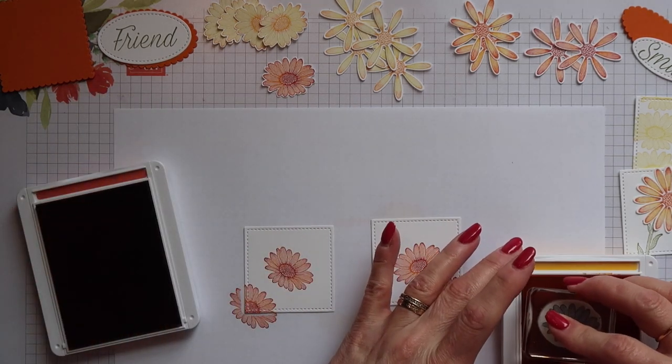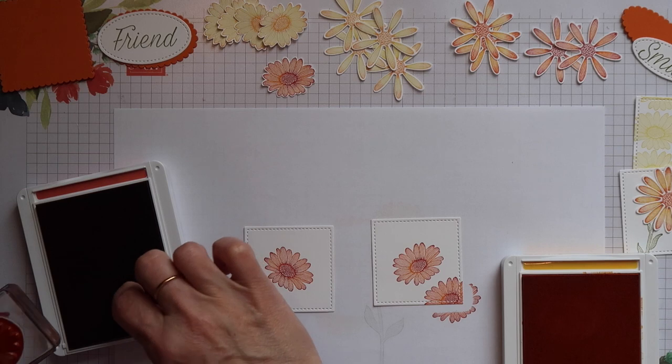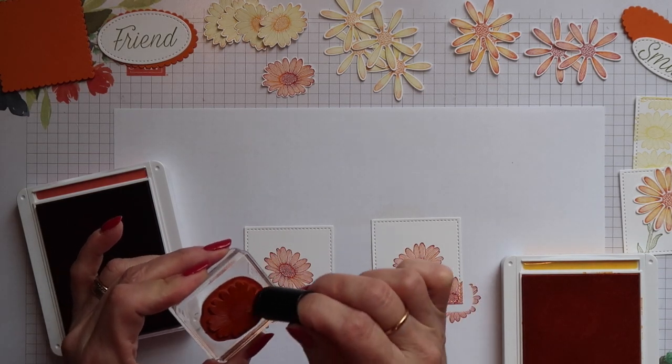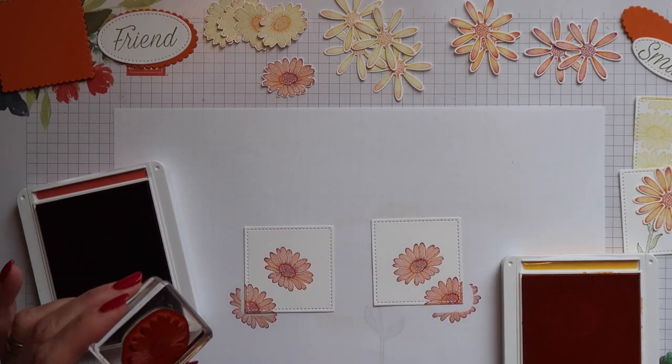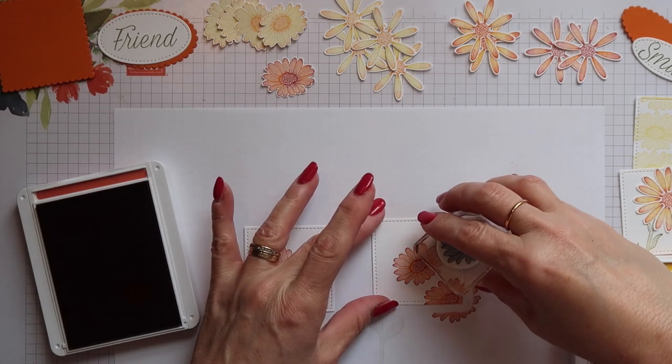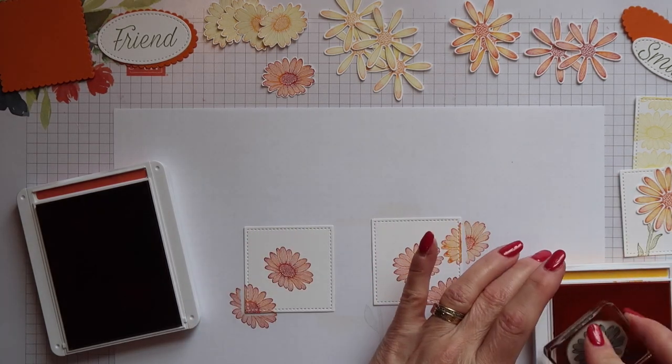I'm now changing to Mango Melody and Terracotta Tile and I'm going to stamp two more daisies on each panel, one either side of the ones I've just stamped.